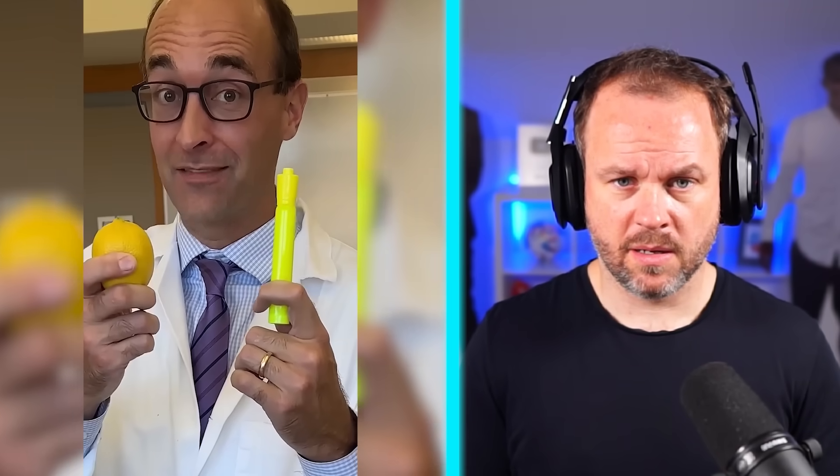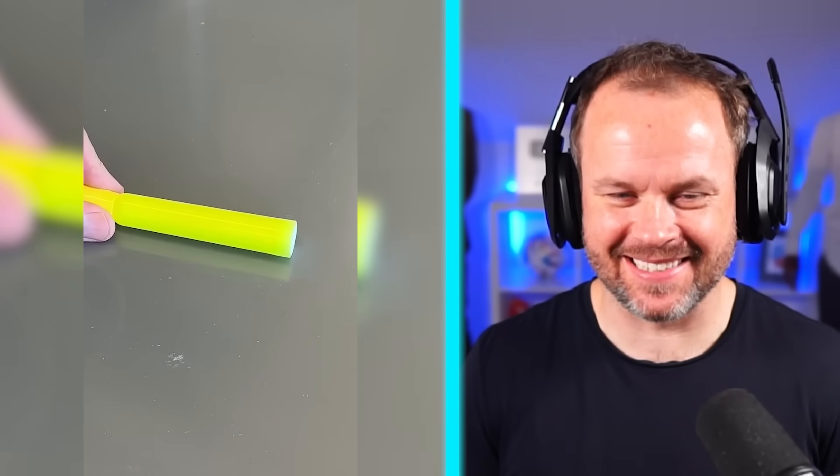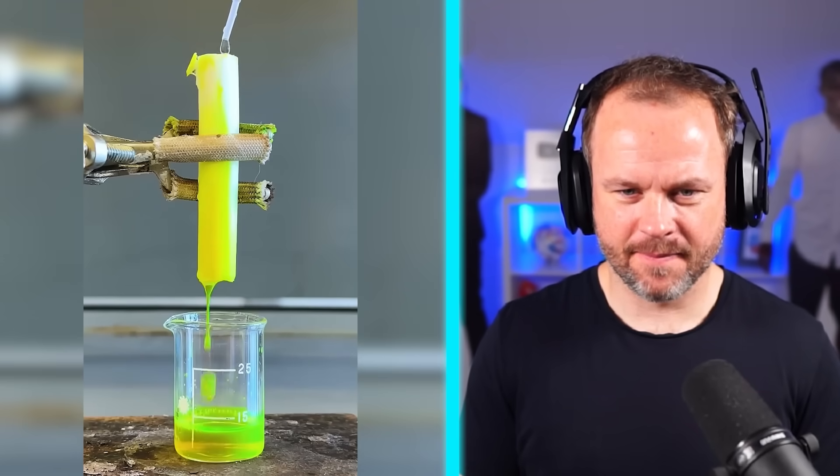Did you know you can make invisible ink using a highlighter and a lemon? Start by mechanically separating the ink reservoir from the highlighter. Now that that's done, we can add water to extract the ink, which ended up taking a few minutes but it was cool to watch under the blacklight.